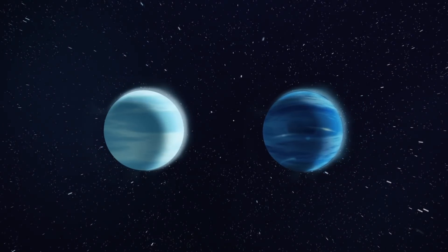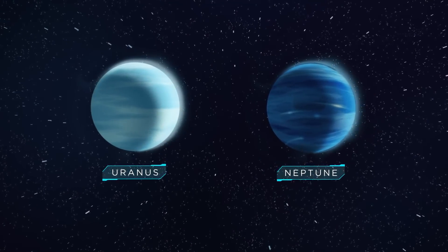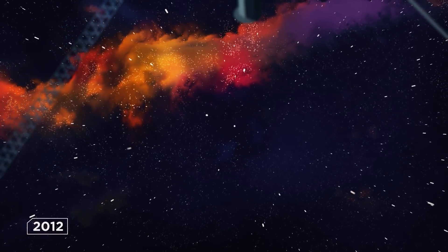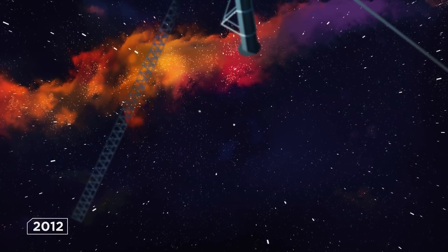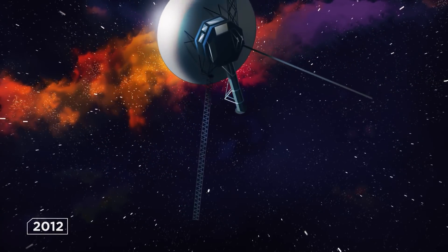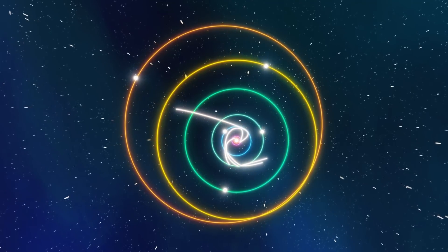Similarly, Voyager 2 researched Uranus and Neptune, becoming the first spacecraft to directly observe either of these distant planets. In 2012, 40 years after its departure from Earth, Voyager 1 surpassed the heliosphere and entered interstellar territory. Voyager 2 followed a mere six years later.